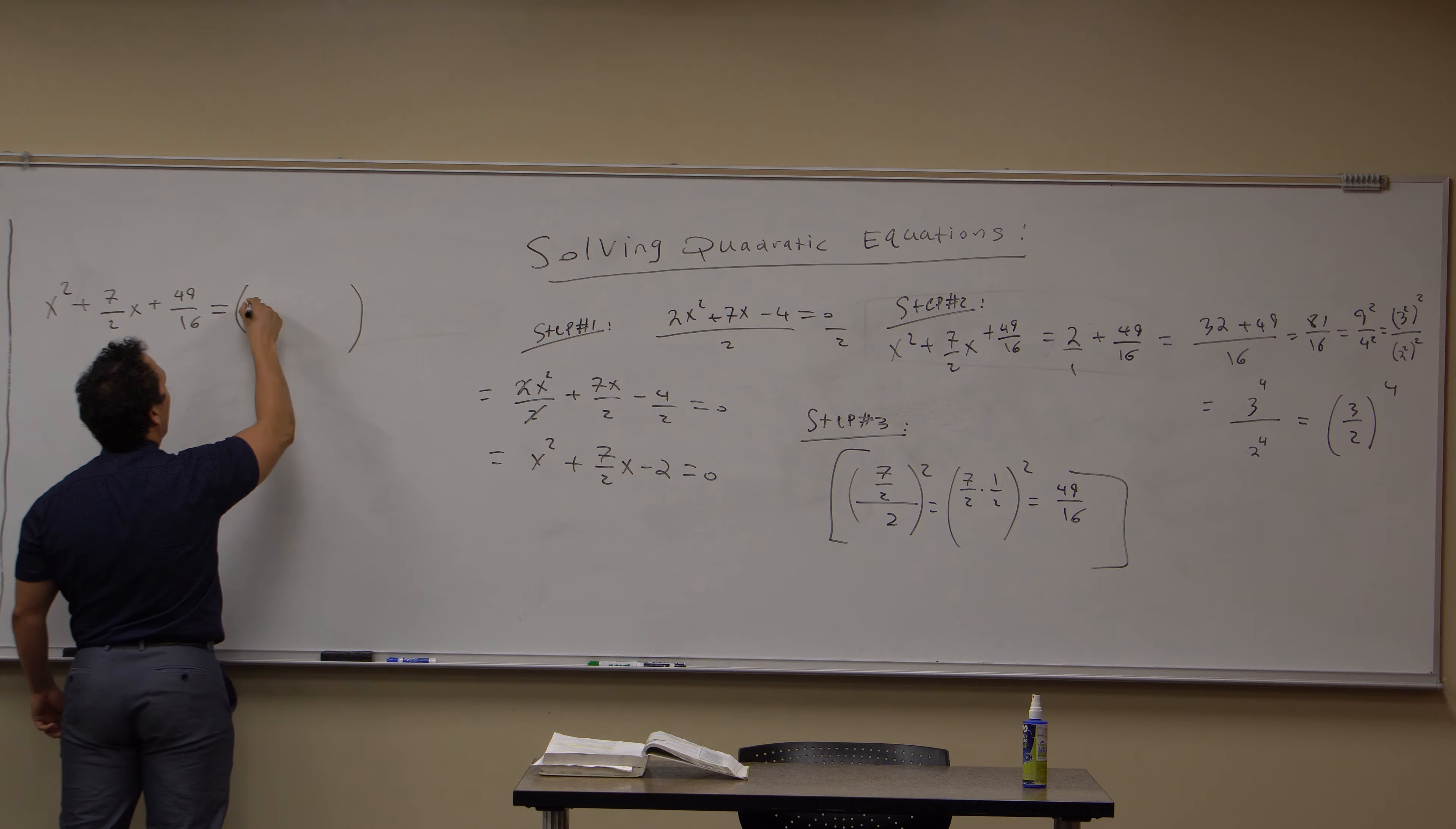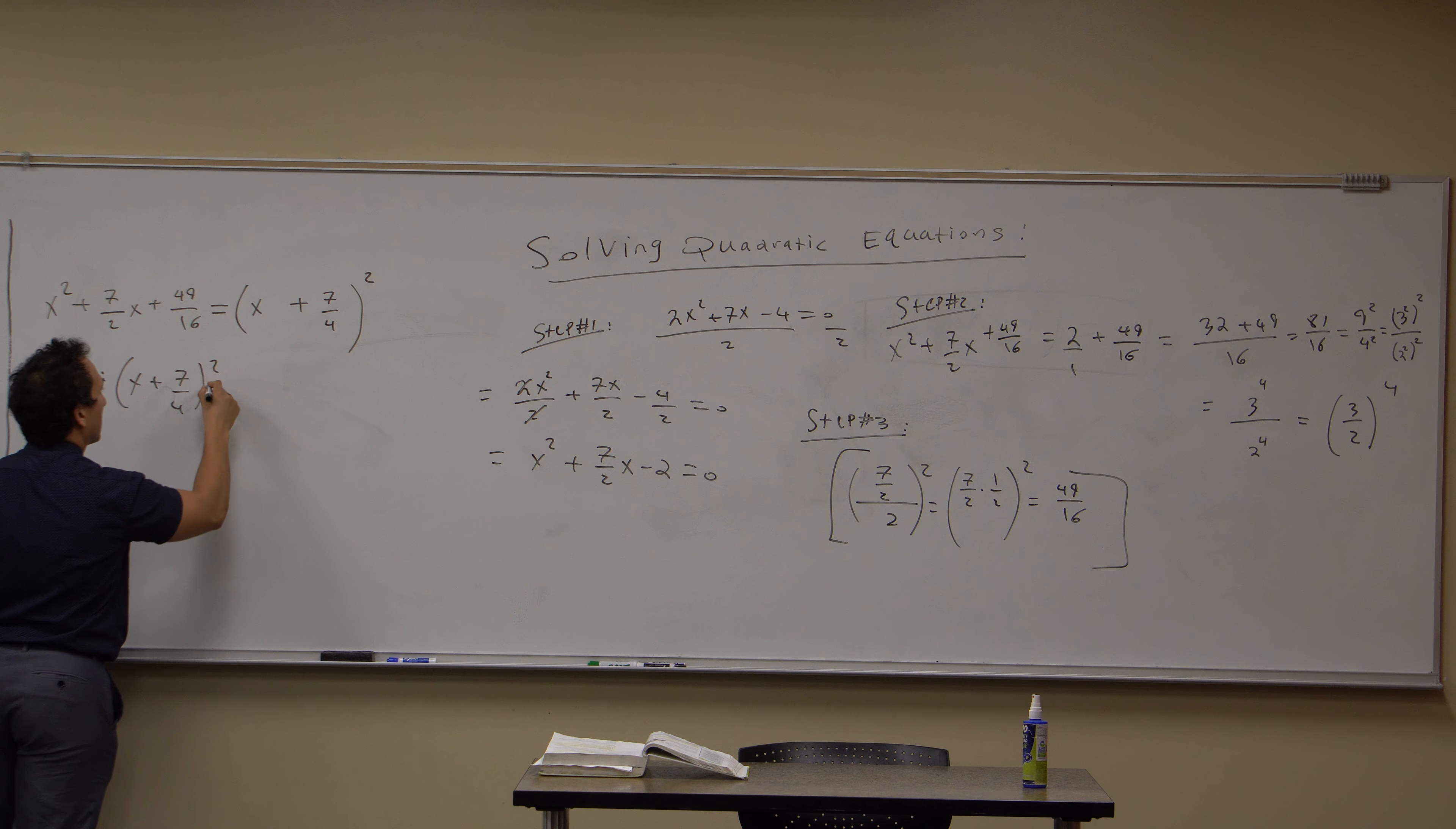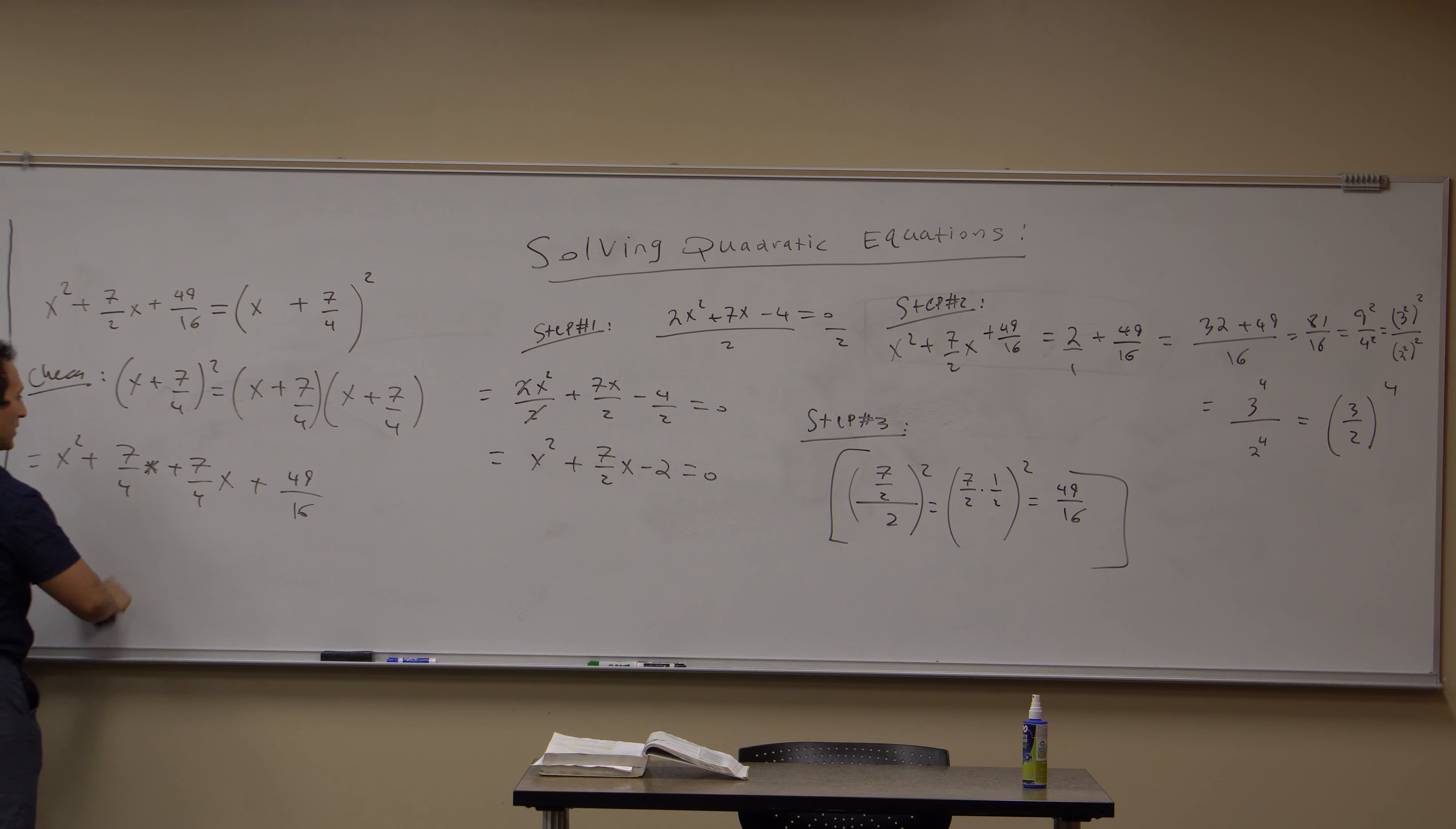I'll rewrite it for good measure. x² + 7/2x + 49/16. This, I claim, is equal to (x + 7/4)². And what is our b? Our b/2 reduces to 7/4. So, (x + 7/4)². I claim that these are equivalent.